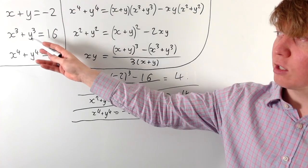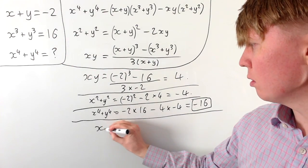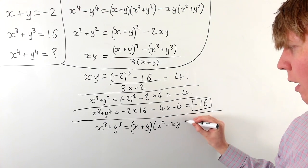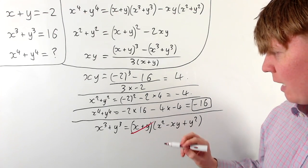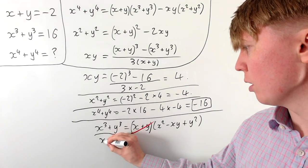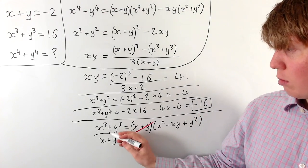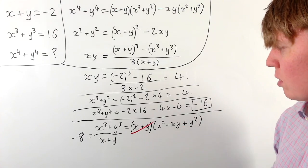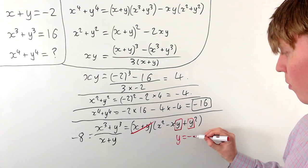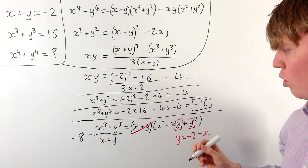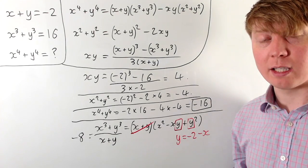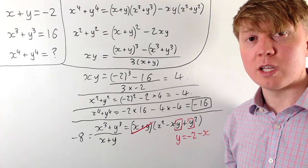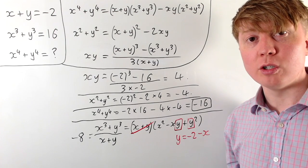There's a nice shortcut using the fact that x cubed plus y cubed factorises into x plus y times x squared minus xy plus y squared. Dividing through by x plus y gives x cubed plus y cubed over x plus y equals a quadratic. We know x cubed plus y cubed is 16 and x plus y is negative 2, so this equals negative 8. Substituting y equals negative 2 minus x gives a quadratic in x, which you can solve to find complex values of x and y. In either case, x to the 4 plus y to the 4 is still equal to negative 16.